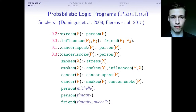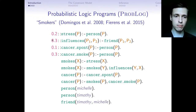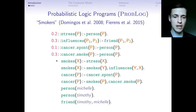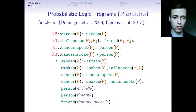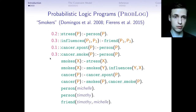The structure of a ProbLog program is basically the same as a typical logic program, but we also have probabilities attached to clauses. Whenever we query a ground atom or a ground formula, instead of a true or false answer, we get a probability in return.